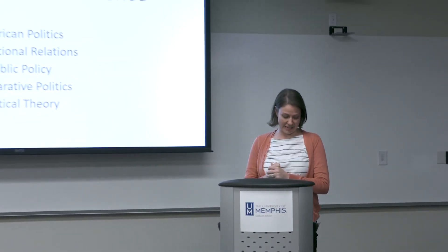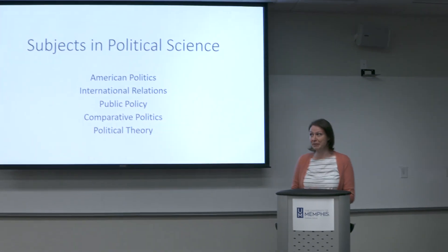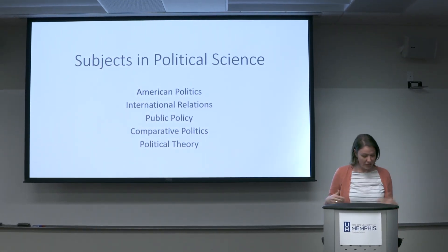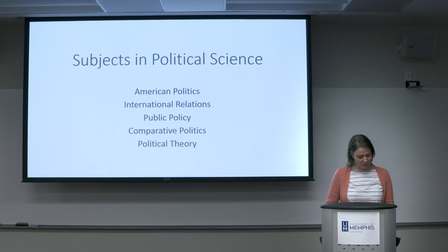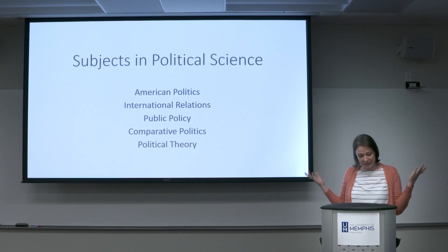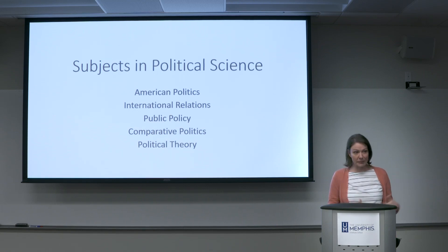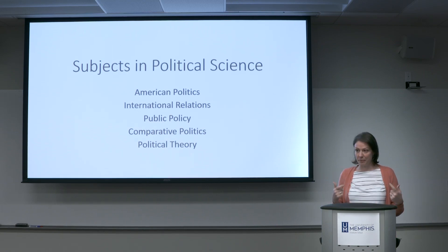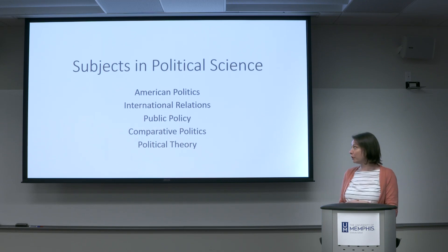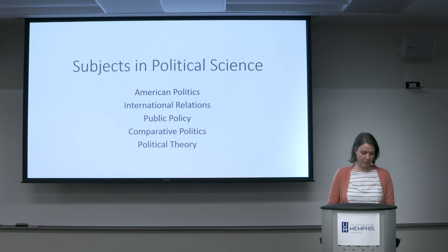I'm not sure I really can tell you what political science is. Basically, it's a social science, and we look at government, institutions, and political behavior. Sometimes it's easier to describe it by telling you what we do. In American politics, you might do a quantitative study on whether expanding Medicaid in a state makes people more supportive of Obamacare, or you might look at what motivates people to take positions on certain issues — sort of a political psychology approach.